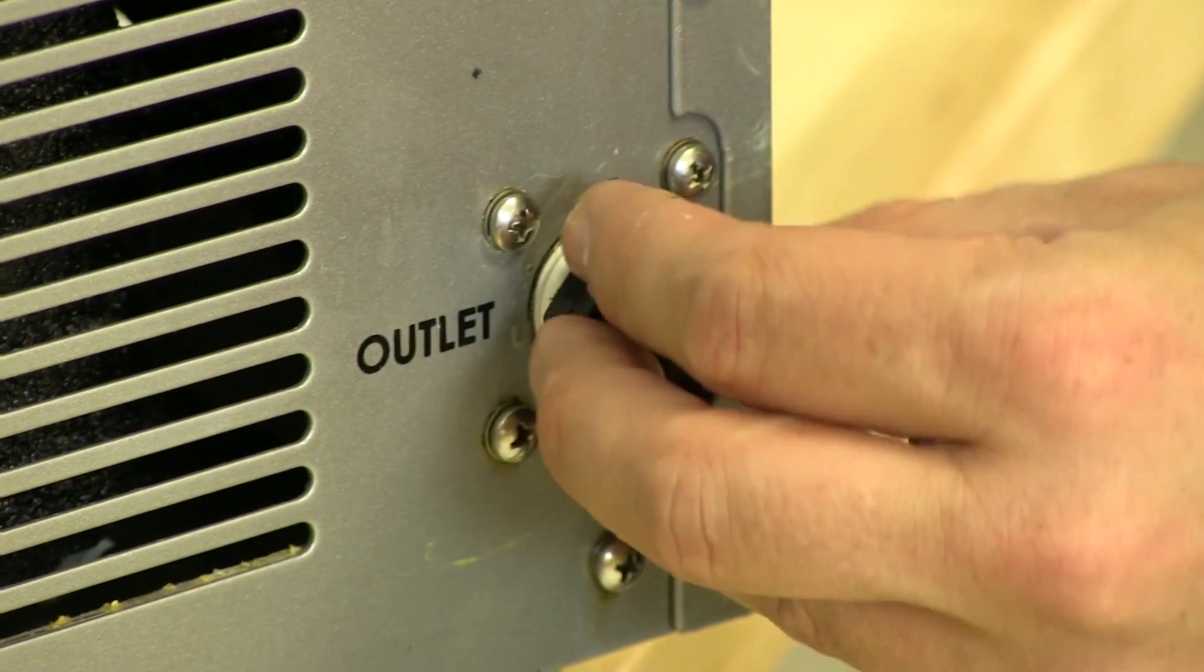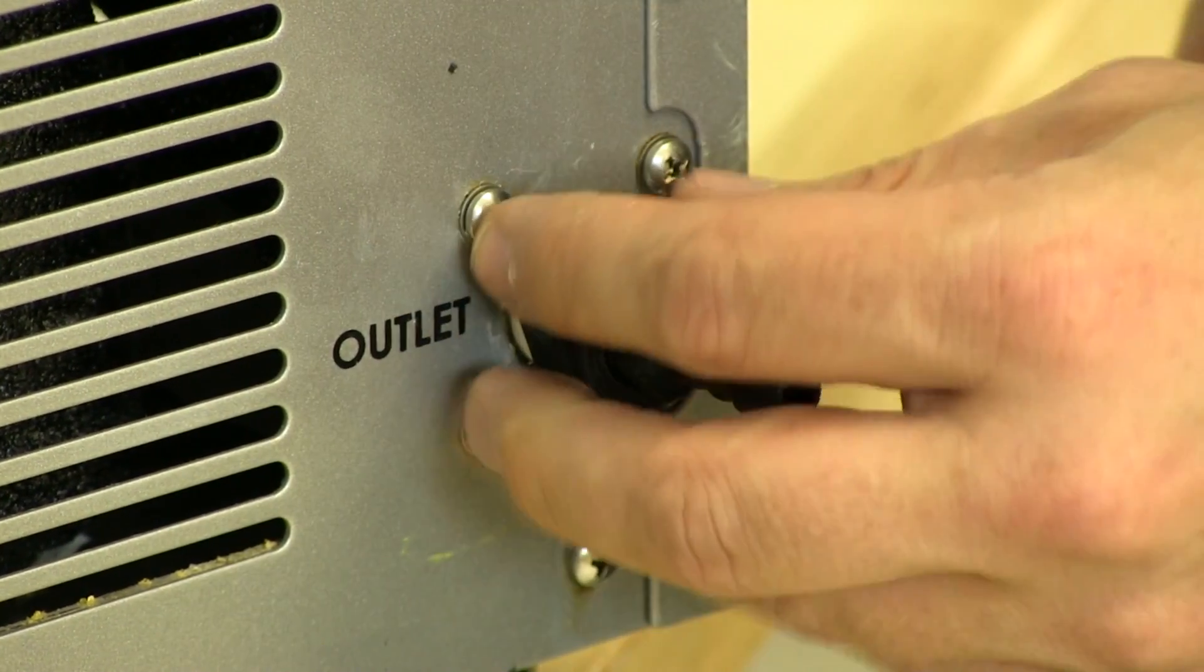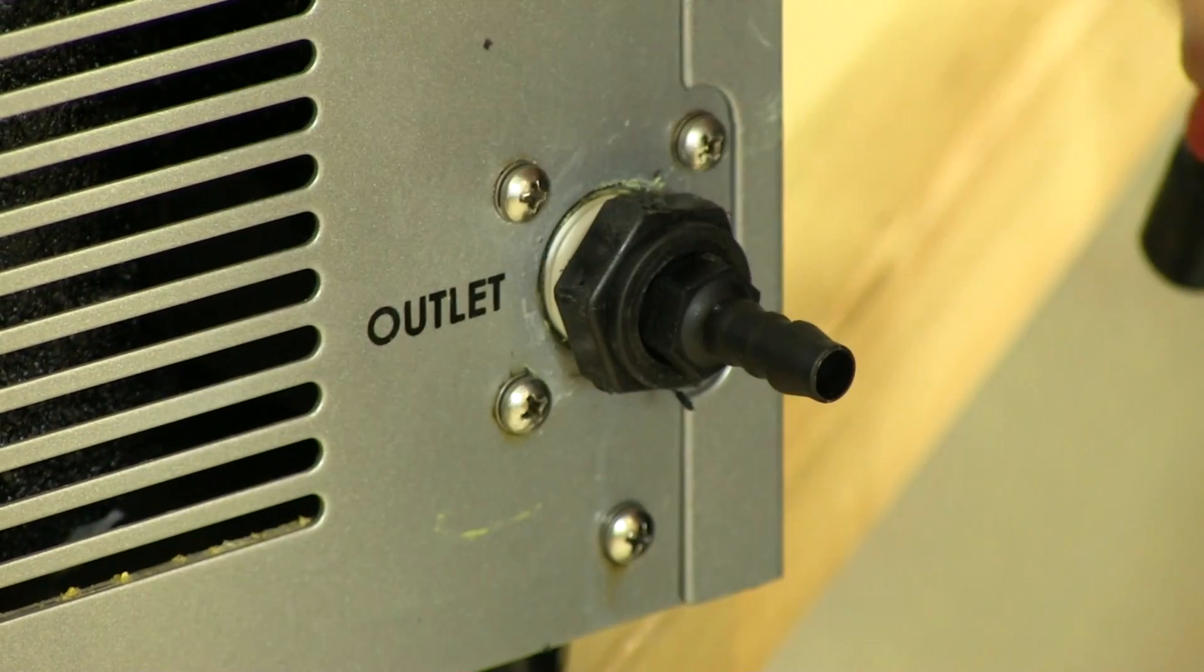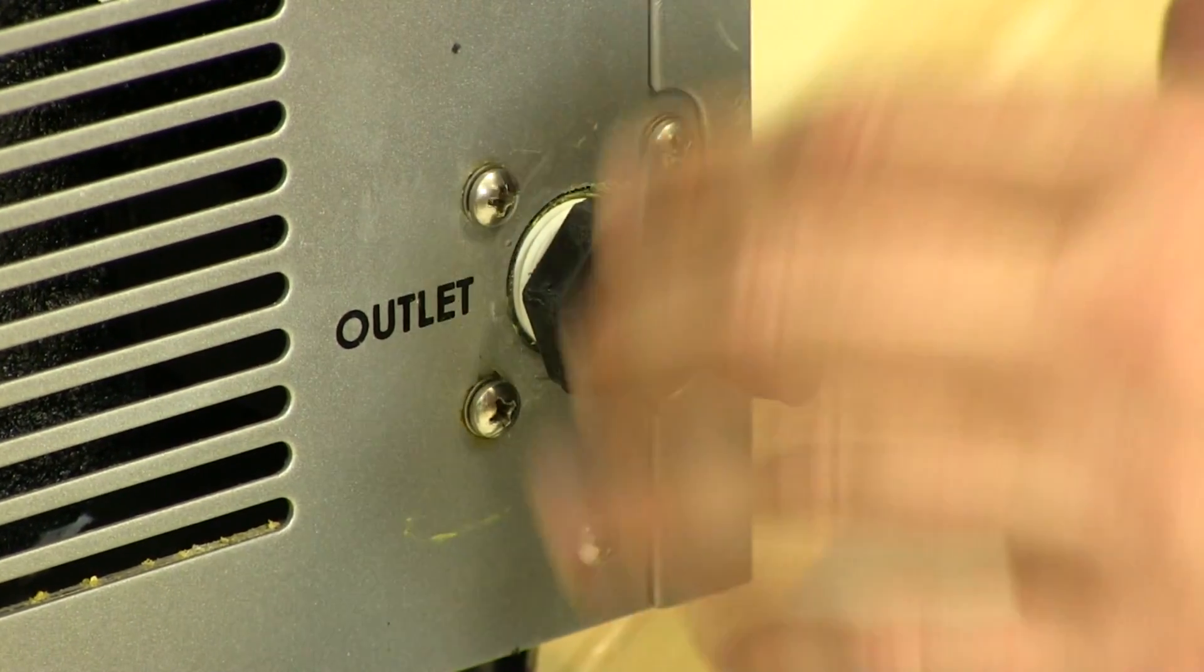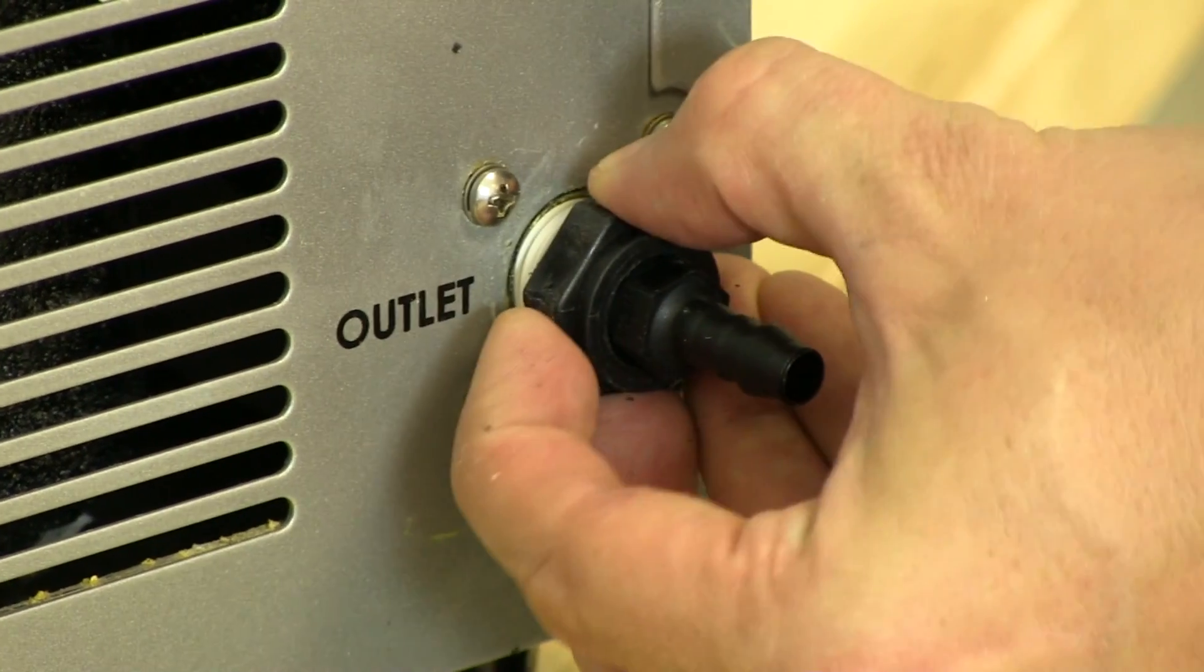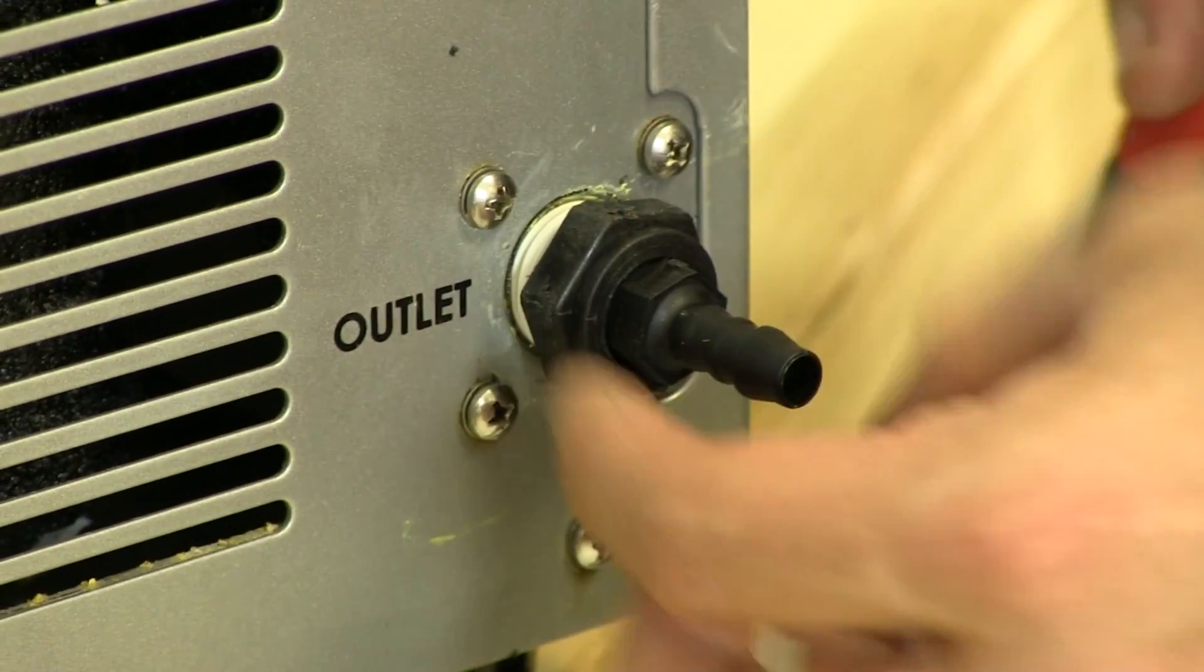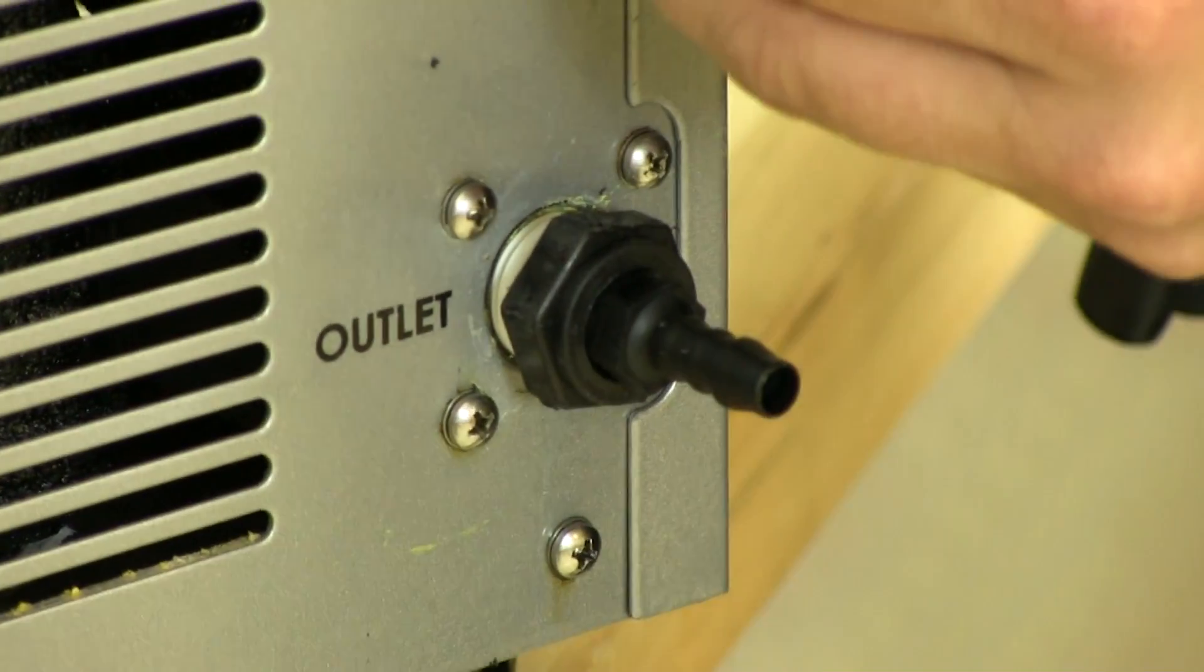The Teflon tape definitely helps in this process. We can always check for leaks later after we fill it and have it running for a moment or two, and if we need to, we can tighten it. It doesn't have to be extremely tight though, it just has to be a nice seal.